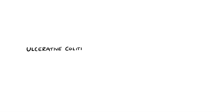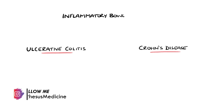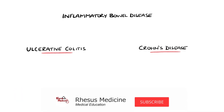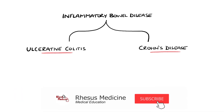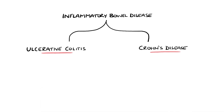Ulcerative colitis and Crohn's disease are the two main forms of inflammatory bowel disease. In this video, we'll cover them both and go through the differences between them, including the histology.